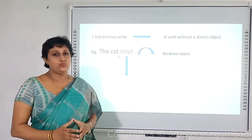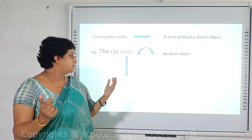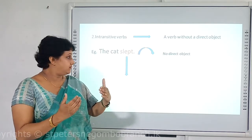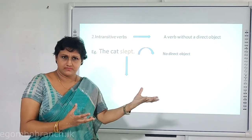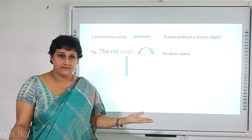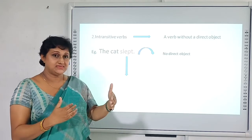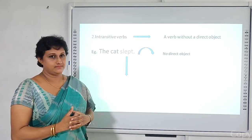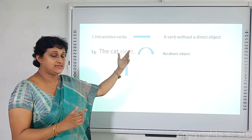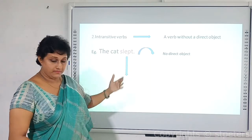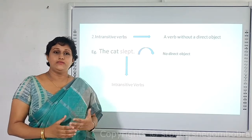For intransitive verbs, take the example 'The cat slapped.' The verb is 'slapped,' but there is no direct object. When there is no direct object in a sentence, the verb is called an intransitive verb. So an intransitive verb is a verb without a direct object.